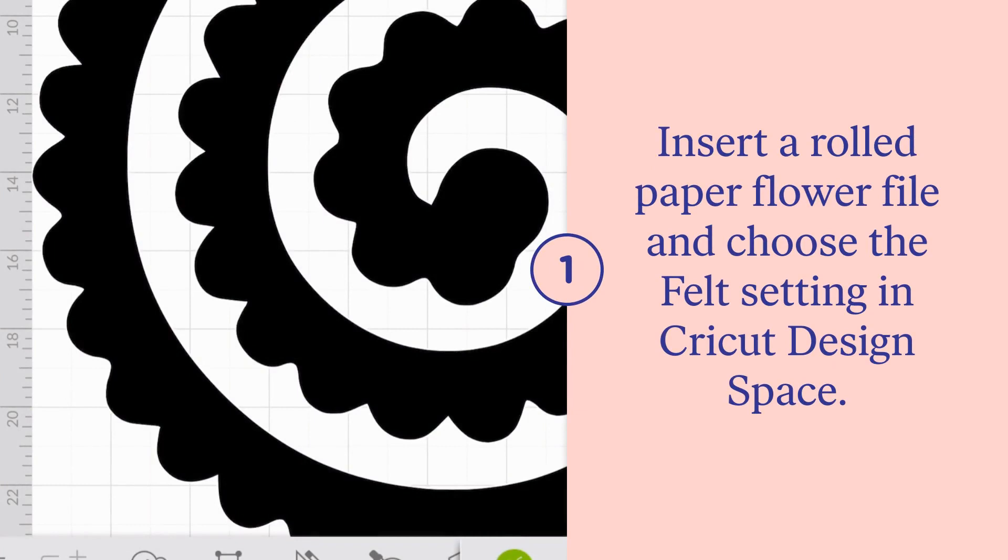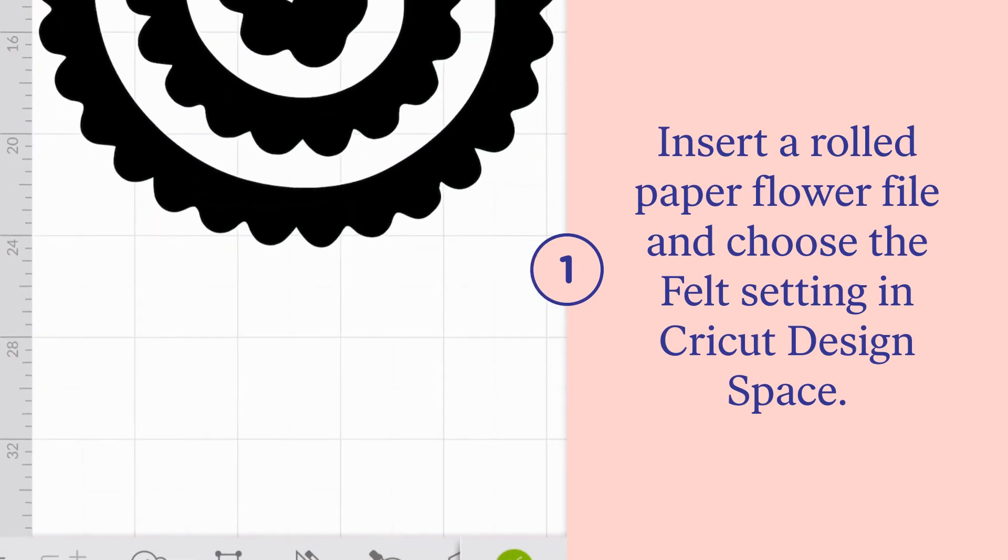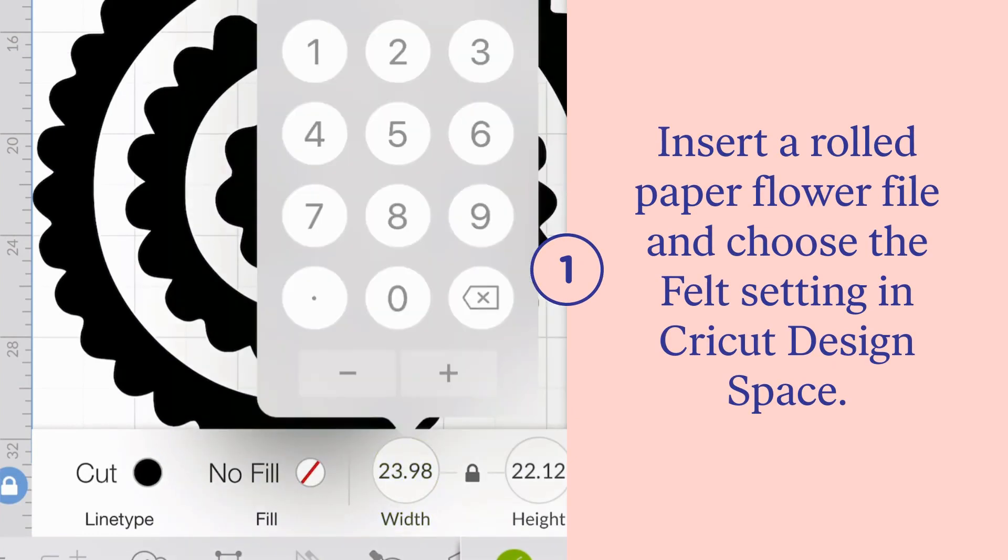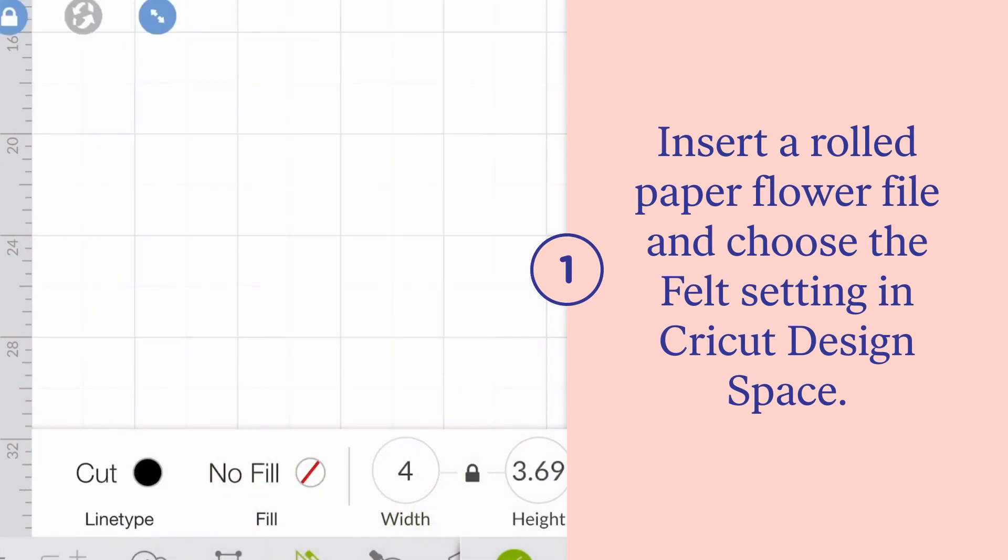To get started with your rolled paper flower, first you need to insert a rolled paper flower image. You can do this through an external SVG or using Cricut Design Space if you're an access member.